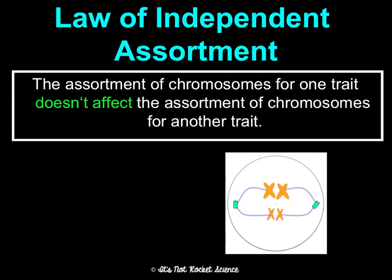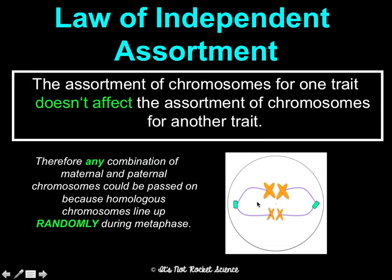The law of independent assortment says that the assortment of chromosomes for one trait doesn't affect the assortment for another trait. During meiosis, when chromosomes line up, it happens randomly — dominant alleles don't all go to one side. Any combination of maternal and paternal chromosomes can be passed on because homologous chromosomes line up randomly during metaphase. This is why you can look so different from your siblings even with the same parents — there are so many possible combinations.